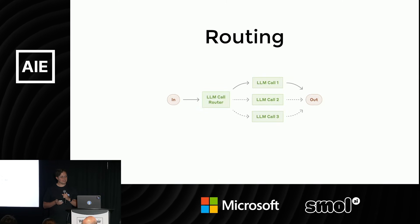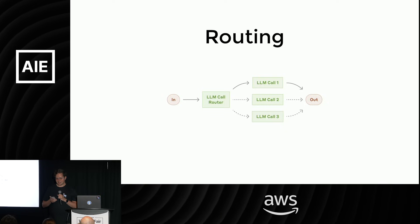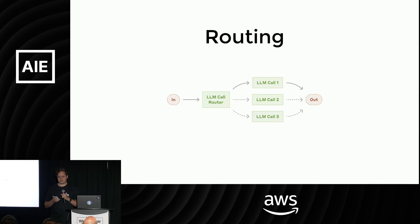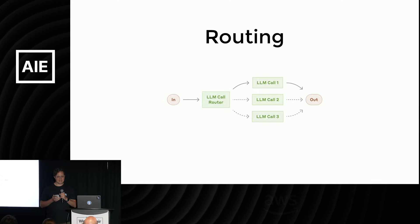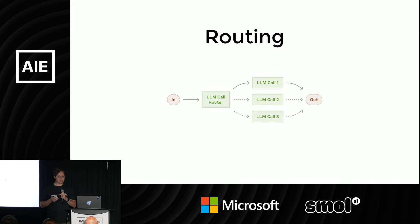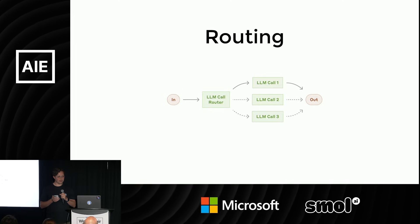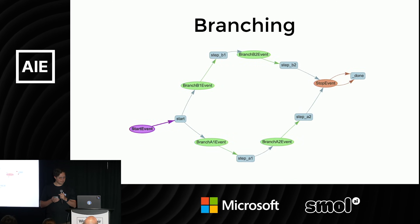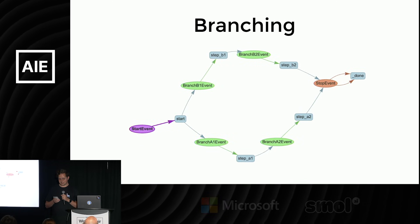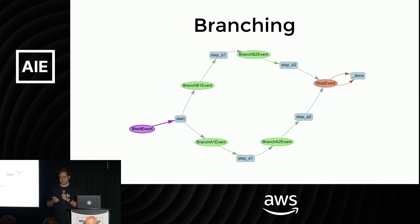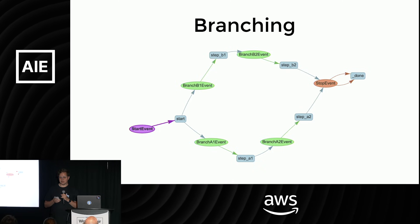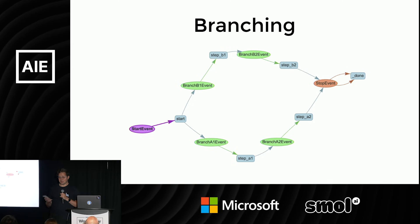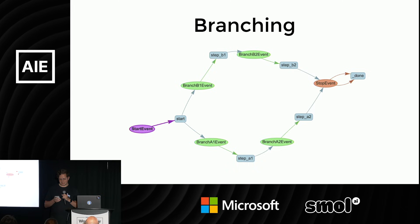The next pattern Anthropic called out is routing. You create several LLM-based tools to solve a problem in different ways or to solve different types of problems, and you give the LLM decision-making power to say which of these tools should I call, which of these different LLM paths should I follow. Not that complicated a concept and simple to build in Llama Index. You can do it using branches — you just decide that you're going to split off into your own chain and do another series of work based on the original decision made by the LLM.